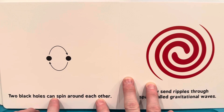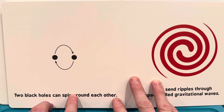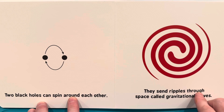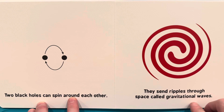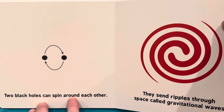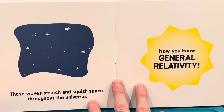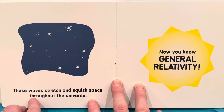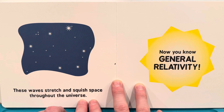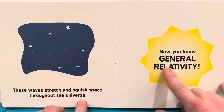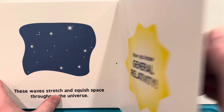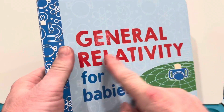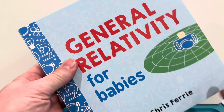Two black holes can spin around each other. They send ripples through space called gravitational waves. These waves stretch and squish space throughout the universe. Now you know general relativity. General Relativity for Babies — the end.